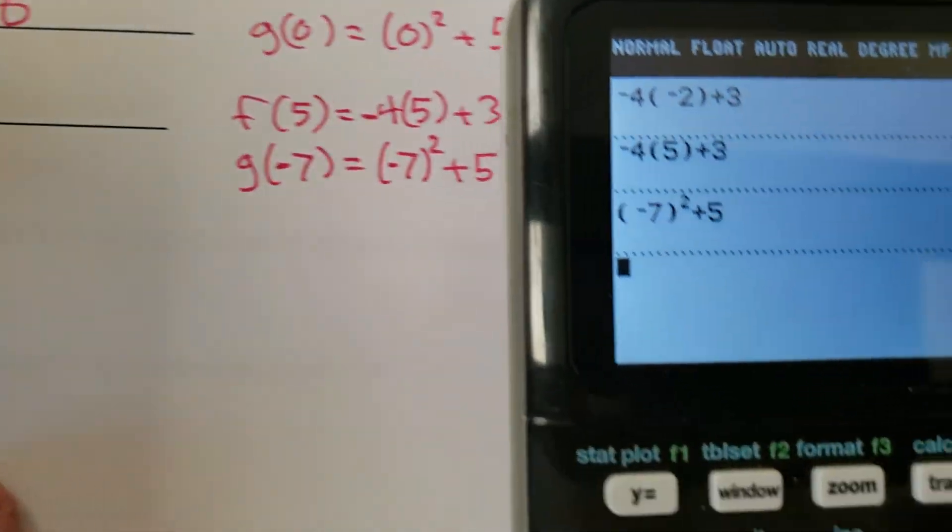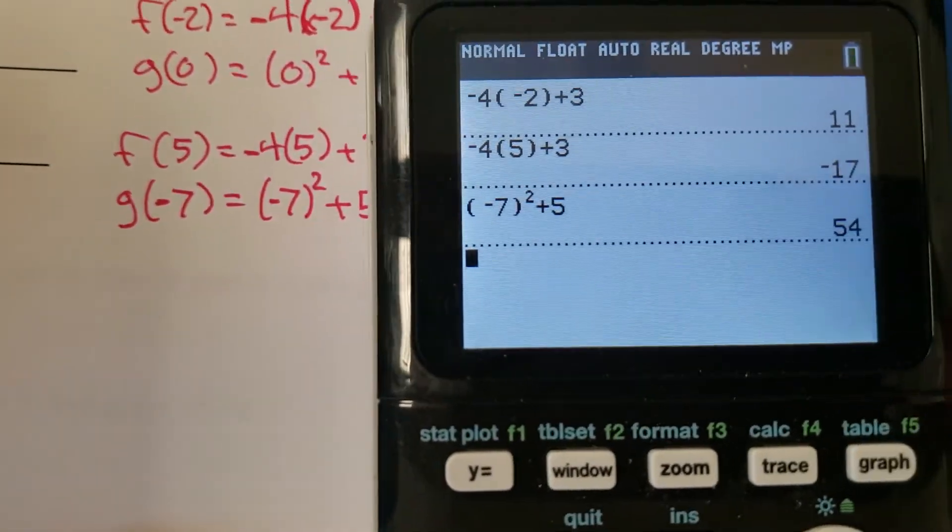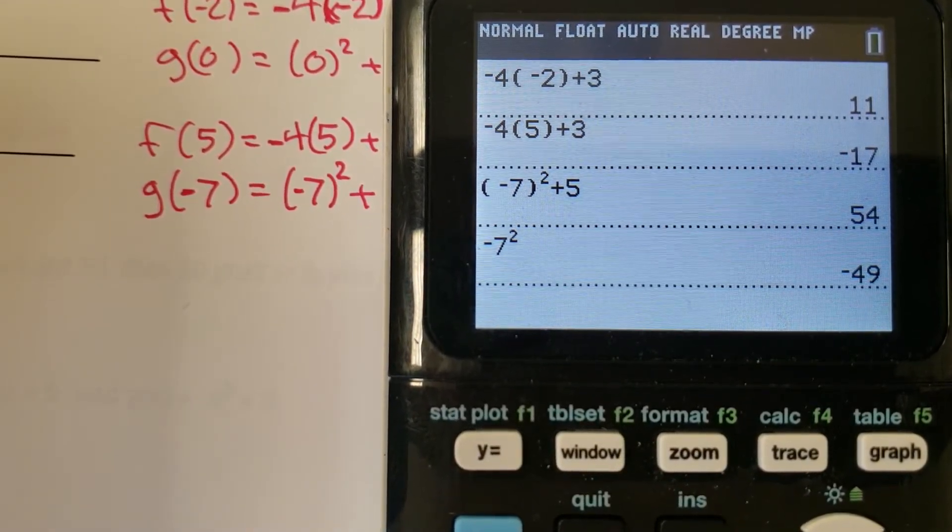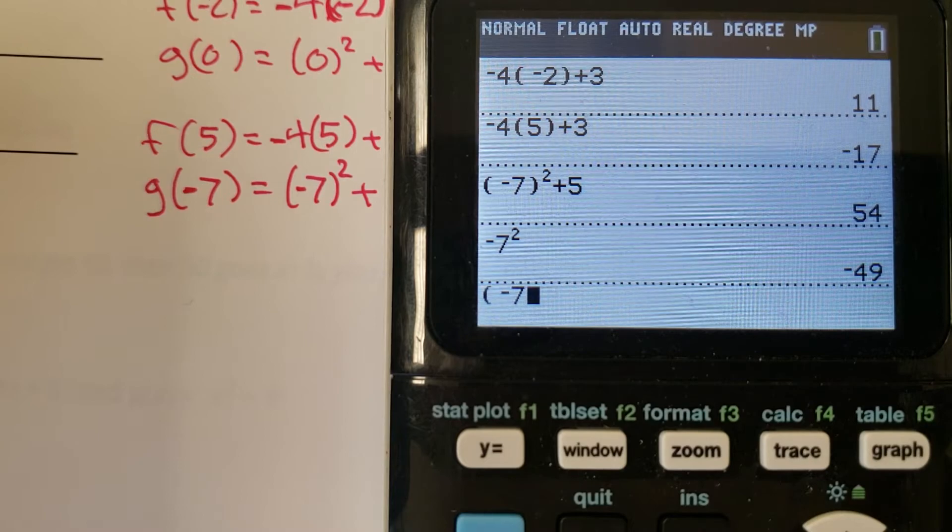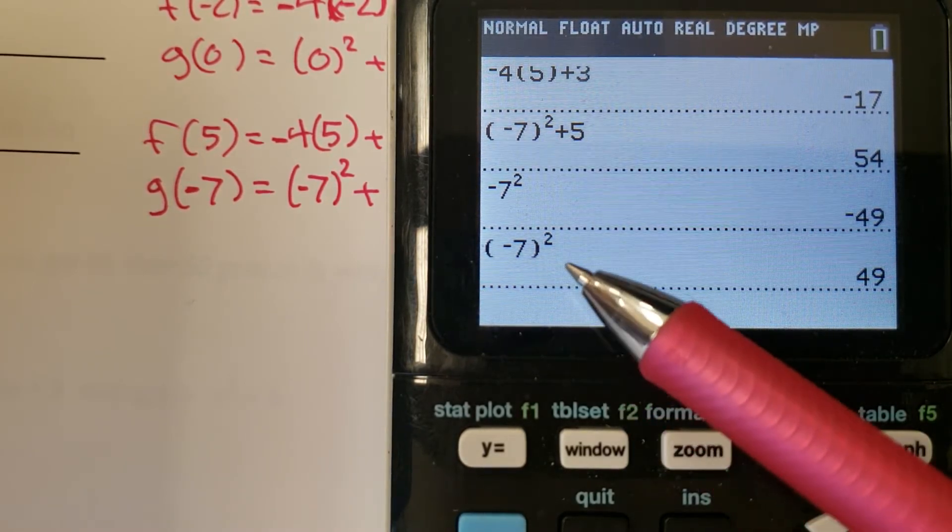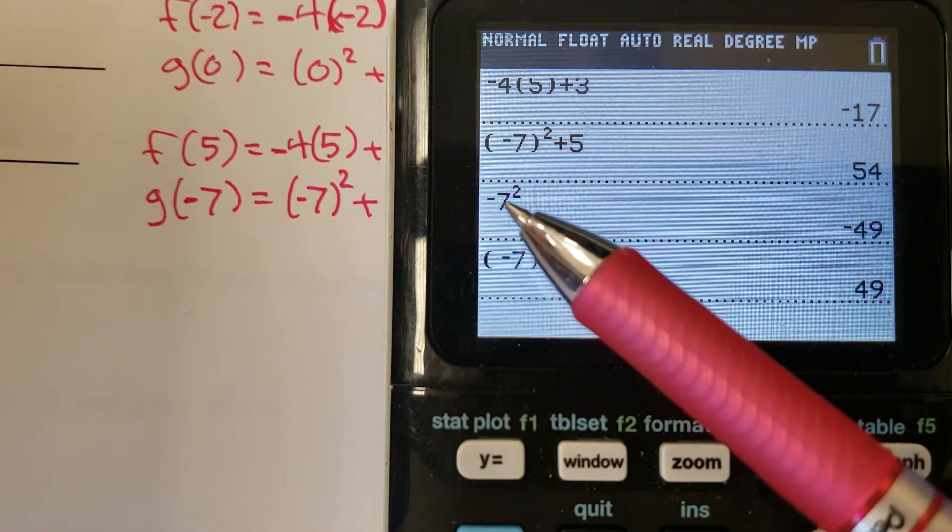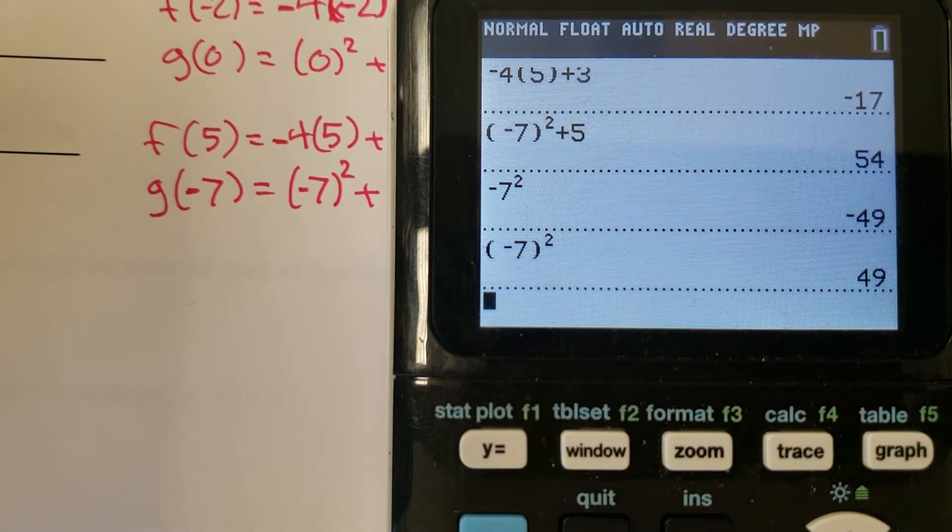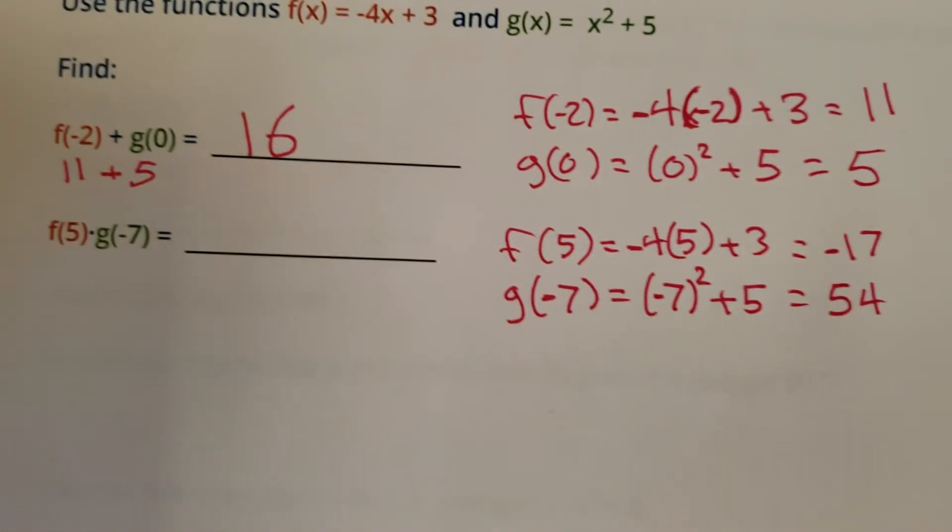Again, I'll highlight this. I've gone over this a handful of times but I feel like it needs to be reiterated. Negative 7 squared, that's negative 49. Brackets negative 7 squared, positive 49. There is a difference. This is the right way. This is the not right way. Don't do this anymore. Use brackets when you square your negatives. Thank you so much.